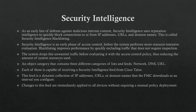The system drops unwanted traffic before evaluating it with the access control policy, thus reducing the amount of system resources used. Security Intelligence is an object category that contains three different categories of lists and feeds: Network, DNS, and URL.